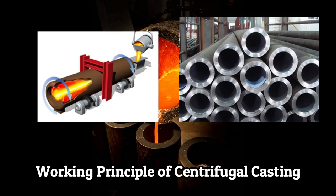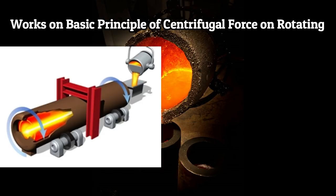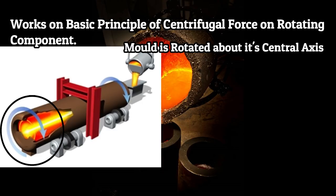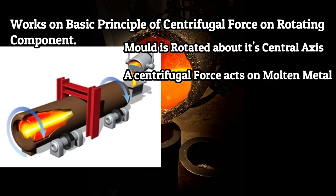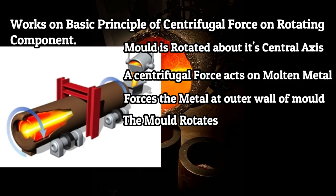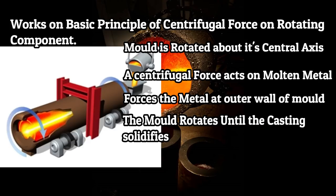Centrifugal casting works on the basic principle of centrifugal force on a rotating component. In this process, a mold is rotated about its central axis when the molten metal is poured into it. A centrifugal force acts on the molten metal due to this rotation, which forces the metal to the outer wall of the mold. The mold rotates until the whole casting solidifies. The slag, oxide, and other inclusions, being lighter, get separated from the metal and segregate towards the center.